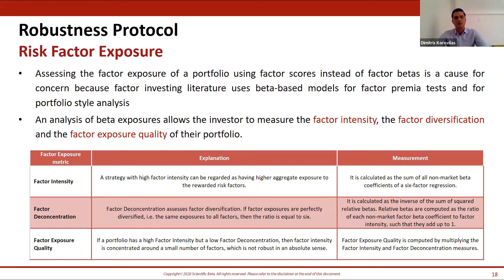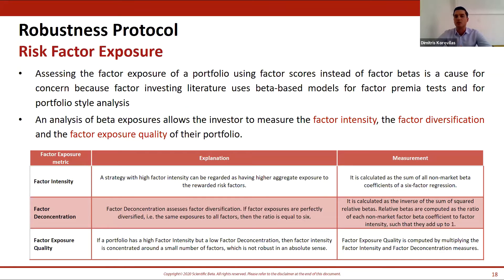On factor exposure quality: investors should be aware that a strategy can easily have strong factor intensity, but this intensity can come from one or two factor bets. Instead, they should look for high betas that are balanced across all factors. A good measure to highlight whether there is a problem is factor exposure quality, which captures both the strength and balance of factor exposures.